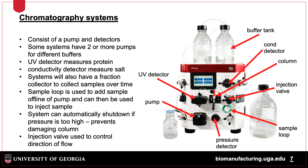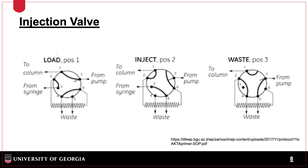One critical part of these systems is the injection valve. It usually has three settings: load, inject, and waste. The load setting means that the sample loop is out of the flow path and can be loaded. The valve can switch to inject so that the sample loop is in the flow path and material in the sample loop goes to the column. In the waste setting, buffer does not flow to the column or through the sample loop, but bypasses the system and goes directly to waste. This setting is useful for changing out buffers when different procedures are being run.